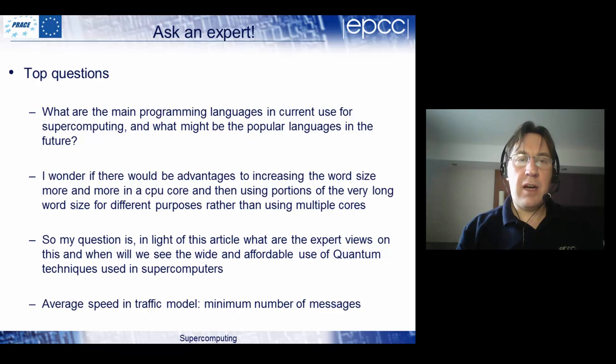So I've put together the top questions, the top liked questions. There are the top three there, and I also added one of my own. There was a lot of discussion in the discussion sessions about the average speed in the traffic model minimizing the number of messages, and that's actually a very interesting topic to talk about.